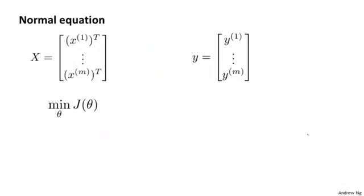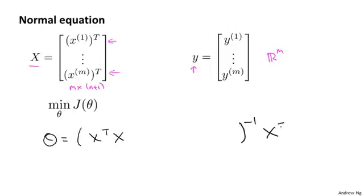Gradient descent was just one of our two algorithms for fitting a linear regression model. The second algorithm was the one based on the normal equation where we created the design matrix x, where each row corresponded to a separate training example, and we created a vector y, an m-dimensional vector that contained the labels from our training set. So whereas x is an m by n plus 1 dimensional matrix, y is an m-dimensional vector. And in order to minimize the cost function j, we found that one way to do so is to set theta equal to x transpose x inverse x transpose y.